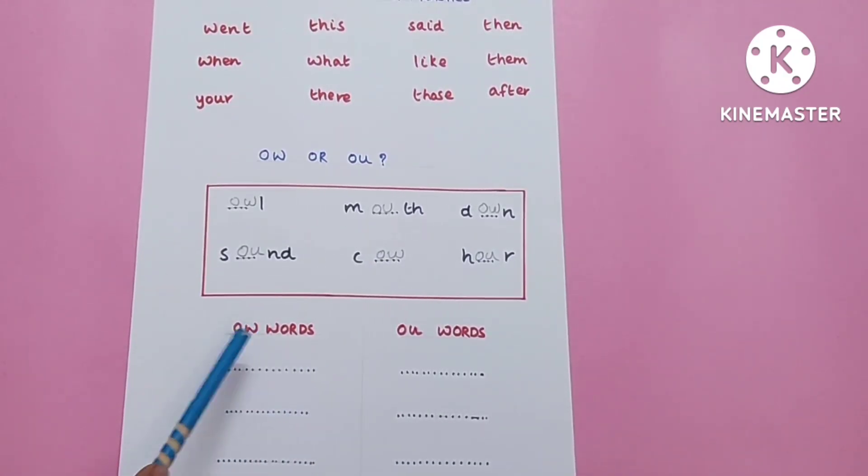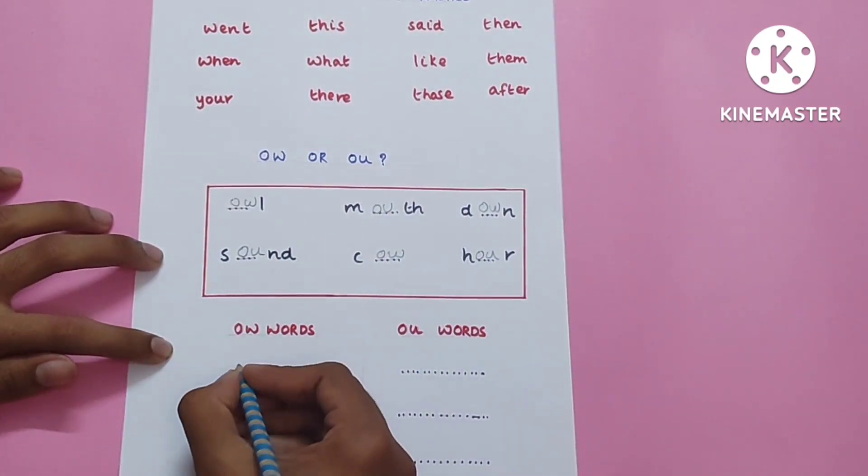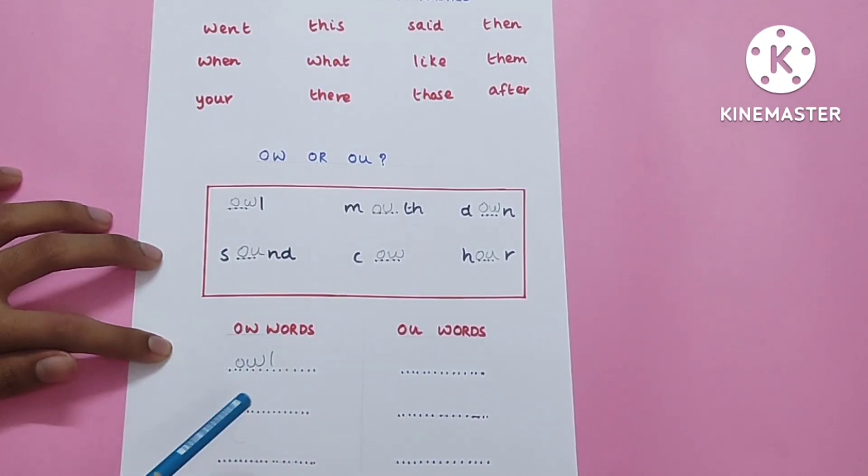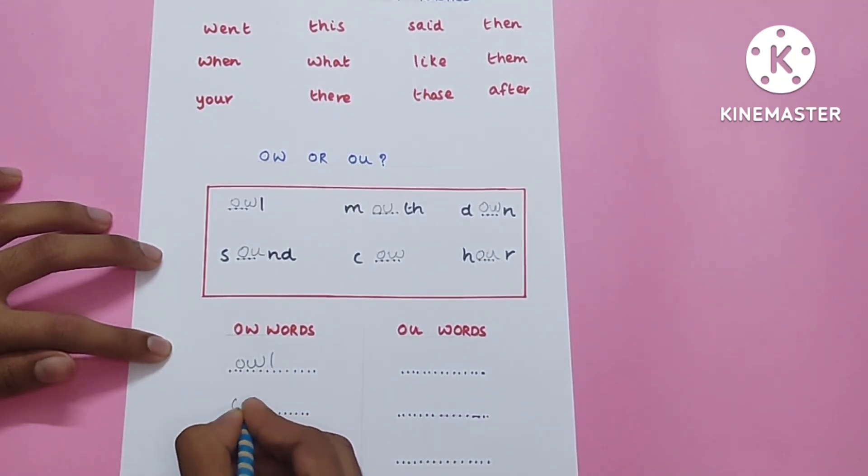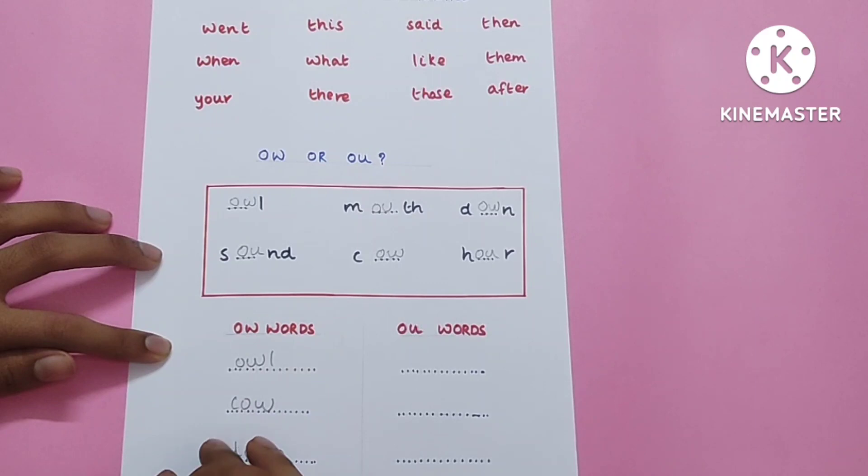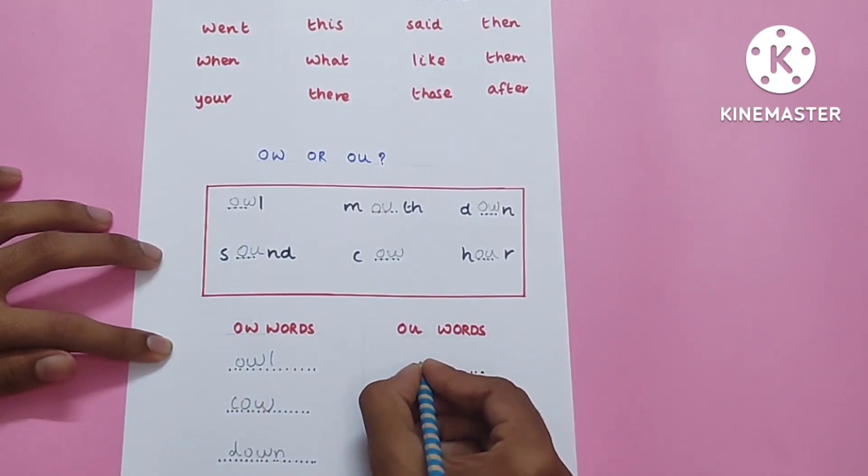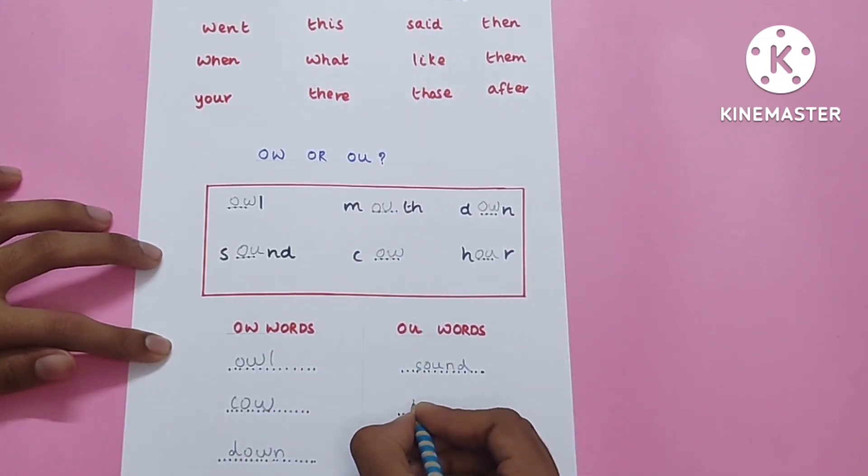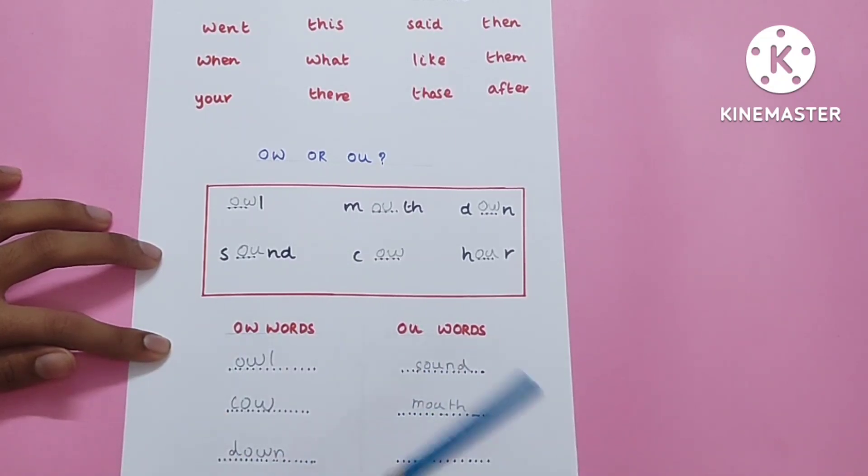Now we will write the OW words and OU words separately. Owl, cow, down. OU sound: mouth, hour.